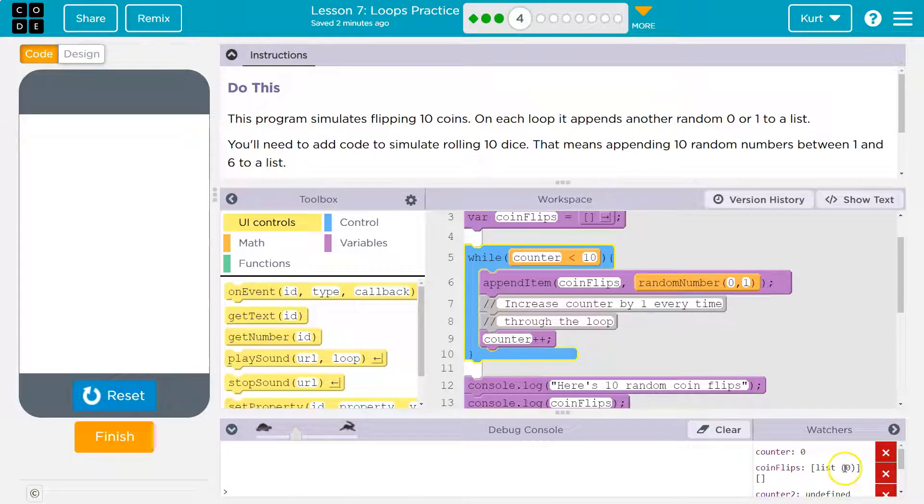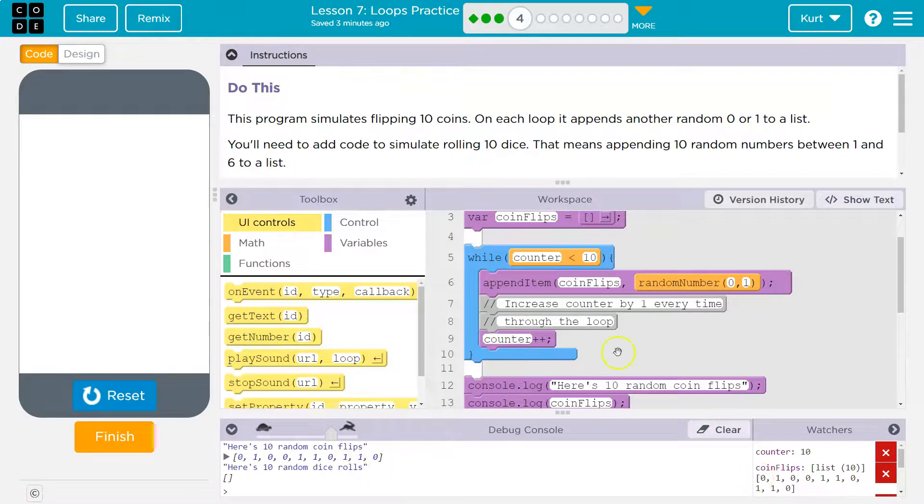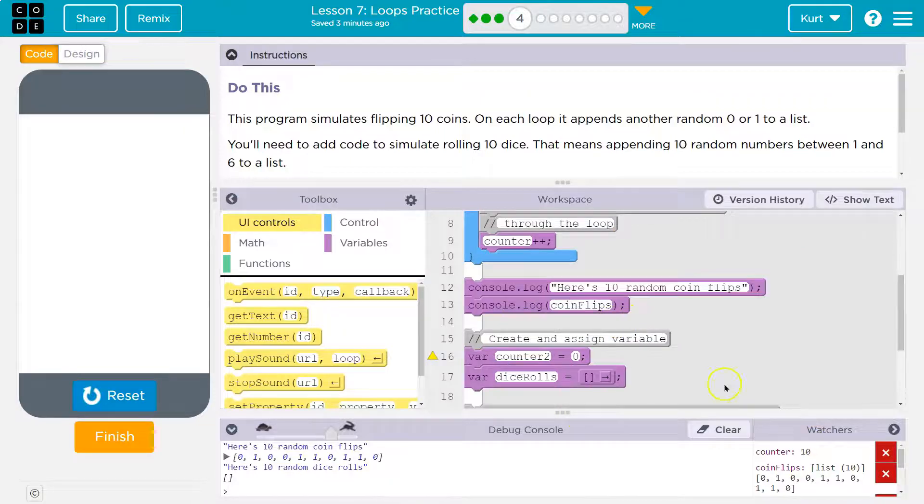Counter is equal to zero. List has a zero in it was the random number that time. Now we have a one. Now counter is equal to two. Now we have a zero. And it's going to just keep going. And then once it has our whole list, it will print it out down here. Cool.